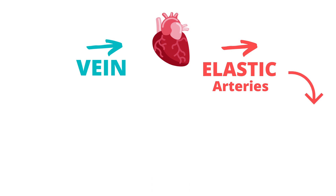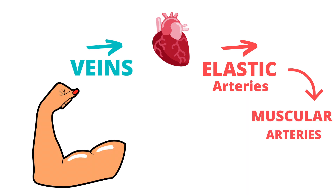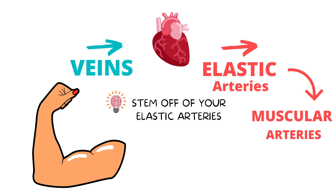Next we have our arteries that branch off of the elastic arteries. These are called the muscular arteries. They are smaller in diameter and they deliver blood to specific parts of the body. They also have a very thick muscular layer, hence the name muscular arteries.